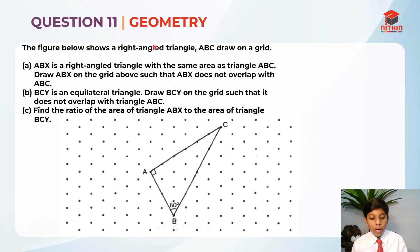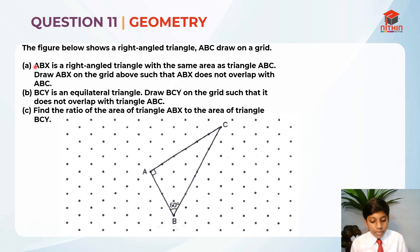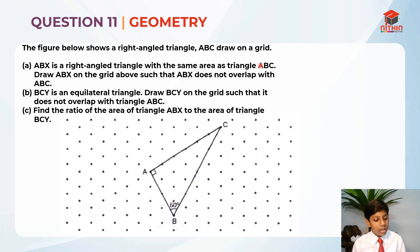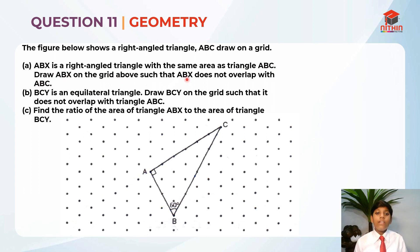The figure below shows a right angle triangle ABC drawn on a grid. Part A: ABX is a right angle triangle with the same area as triangle ABC. Draw ABX on the grid above such that ABX does not overlap with ABC.